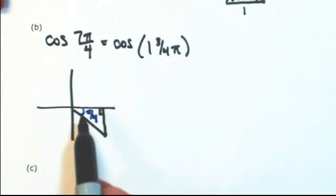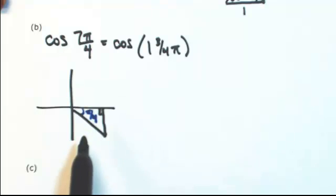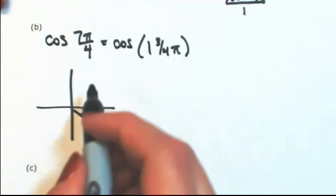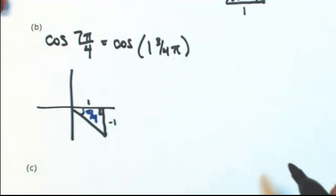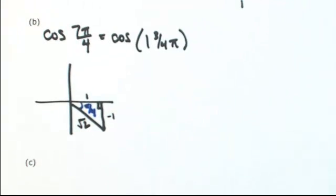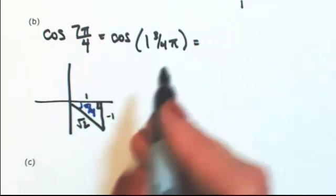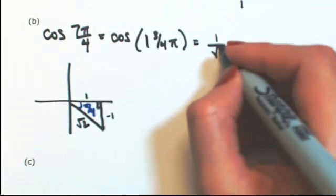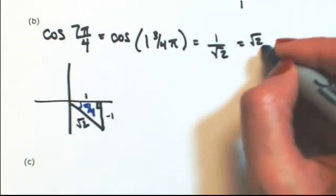So looking back at the 45 degree triangle, the opposite and the adjacent are ones. But look at where you are. Opposite is going to be a negative number, so negative 1. Adjacent is going to be positive. Hypotenuse will always be positive. So from my triangle, I can now find those. So the cosine is adjacent over hypotenuse, so 1 over the square root of 2, or square root of 2 over 2.